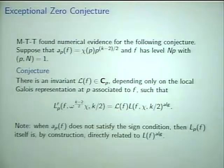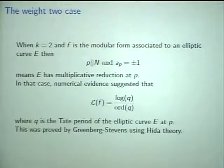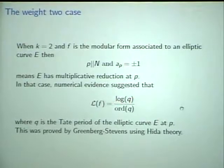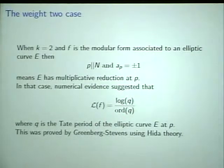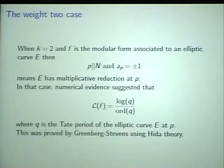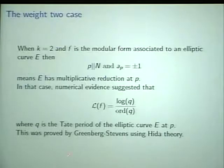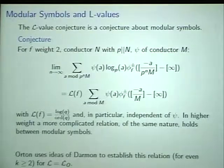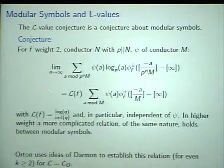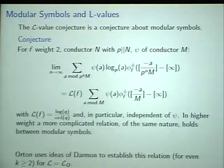In the case where the p-adic L-function vanishes to one higher order than predicted by the Beilinson-Swinnerton-Dyer conjecture, if you compare the algebraic value and the p-adic analytic value — taking the derivative since the order of vanishing is off by one — you find a number L(f) that doesn't depend on chi. The presumption is that this number L(f), which relates the algebraic value of the L-function and the p-adic L-function, is some local invariant of the Galois representation associated to the modular form f. This is one construction of a number called the L-invariant of f. If k is 2 and f is a modular form associated to an elliptic curve with multiplicative reduction at p, then you have a Tate curve, and numerically it seemed that L(f) is log(q)/ord(q). This was proved by Greenberg and Stevens as an application of Hida theory.